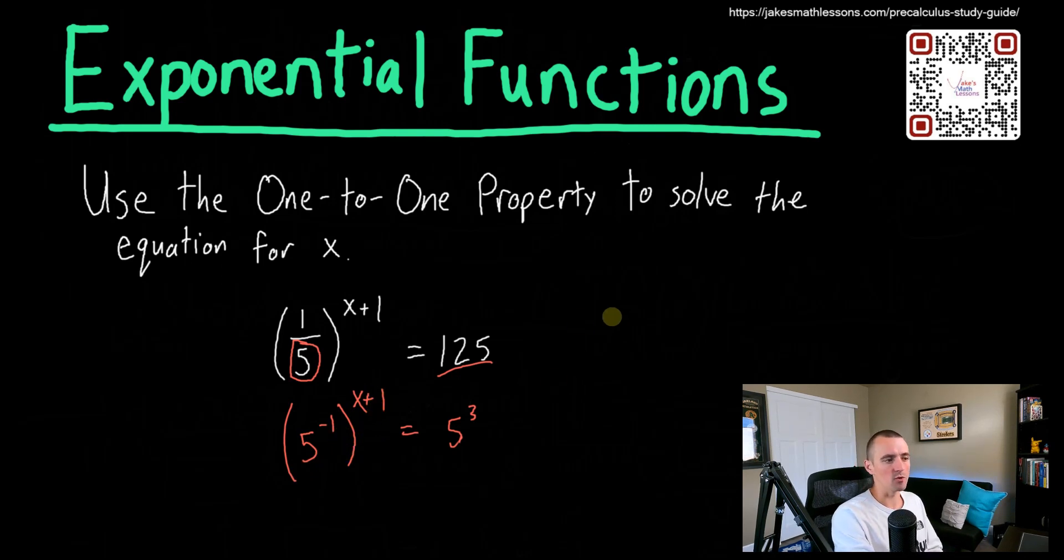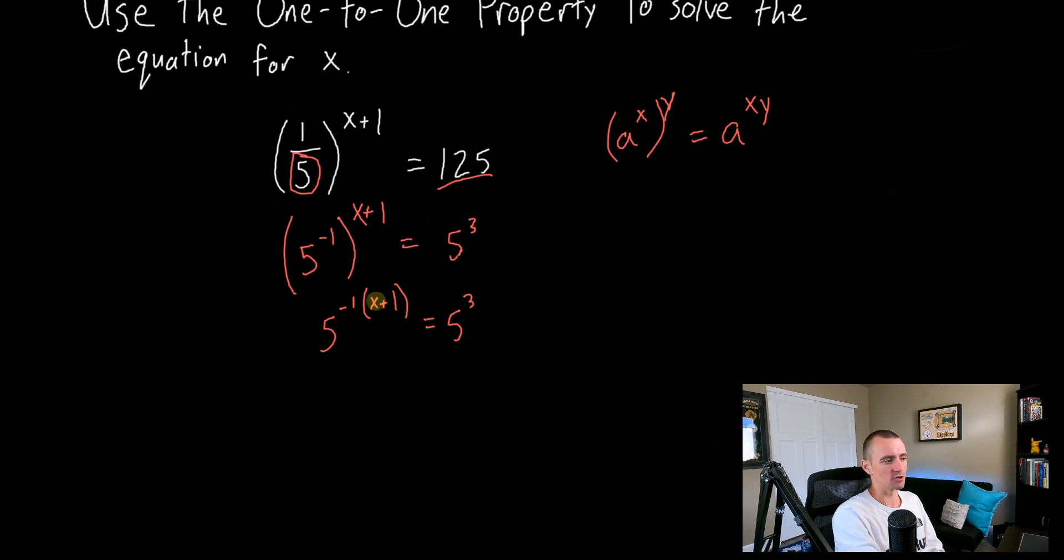Well, you want to keep in mind, if you ever have a power raised up to a power, so if we have like a to the x all raised up to the y, this can be simplified by multiplying the two powers together. So this would be a to the x times y. So in other words, in this case, we can say five raised up to the negative one raised up to the x plus one. We can multiply the powers. So we can do negative one times x plus one. Just be careful to make sure to put x plus one in parentheses here so that it distributes. And then what you can do is distribute that negative one inside the parentheses, giving us five to the negative x minus one equals five to the third.